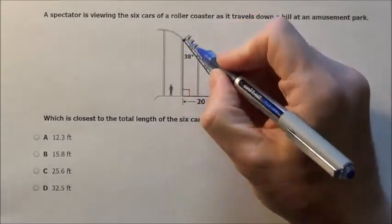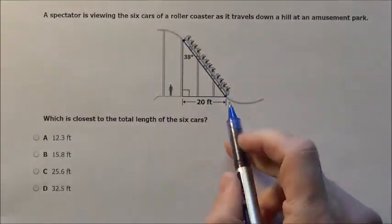So it basically wants, here's the six cars, it goes from there to there. It basically wants the hypotenuse of this triangle.